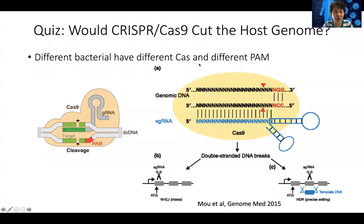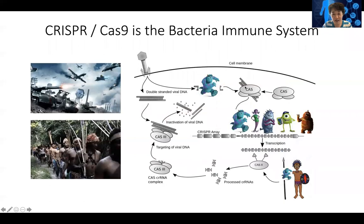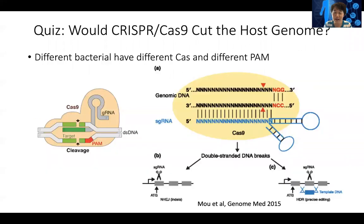We have a question: we know the bacteria kept a copy of the viral DNA on its own genome, and it's also making RNA copies. Next time the virus comes, Cas9 will use this photo to match and cut the DNA. The question is: would Cas9 also use this photo to cut the original bacteria DNA — cut its own host genome? Would that happen? Students, type your answers onto the screen.